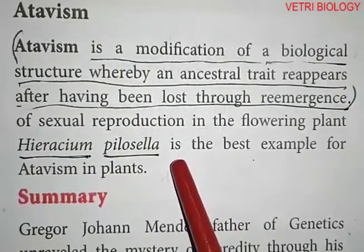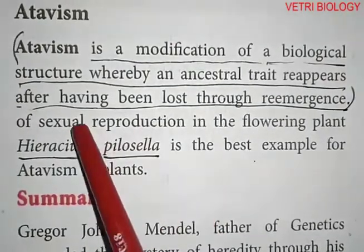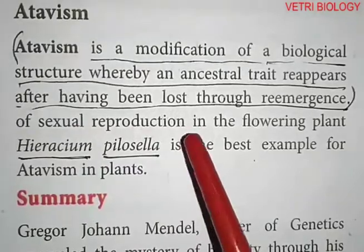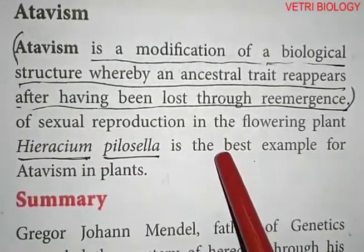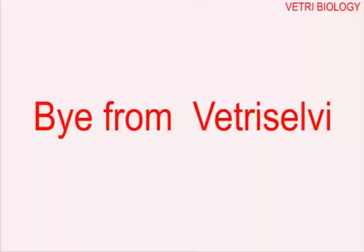The re-appearance of sexual reproductive capacity in plants is an example of atavism. We have now completed Chapter 2: Classical Genetics. We will meet in the next class. Thank you, children.